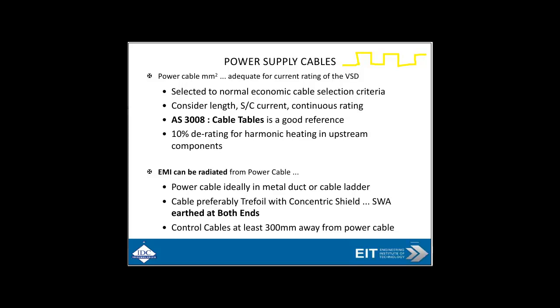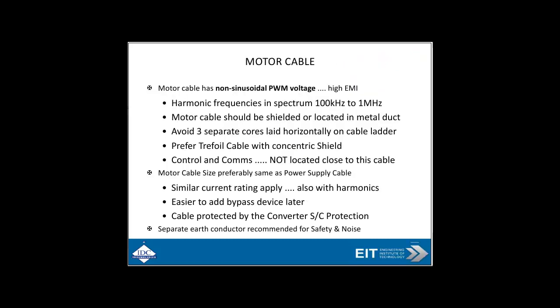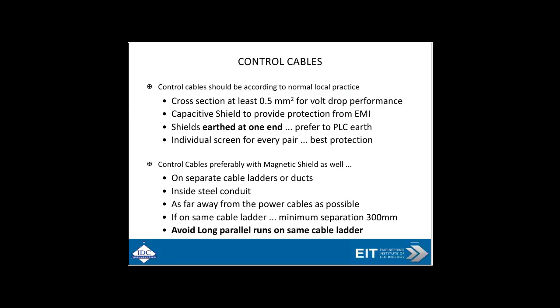For power supply cables, make sure the cross-sectional area in mm² is suitable for the current rating — it's dependent on length, short-circuit current, continuous current rating, applicable cable tables, 10 percent derating, and derating for harmonic heating on non-linear load components. Remember that electromagnetic interference can be radiated from power cables. Control cables should be at least 0.5 mm² for low voltage drop performance, shielded at one end only to the PLC earth, and control cables benefit from a magnetic shield as well.